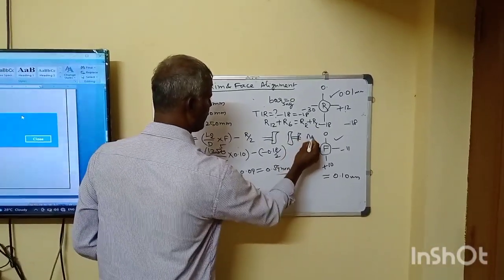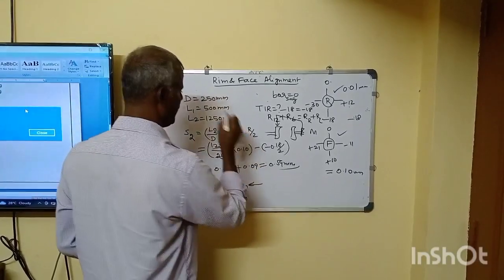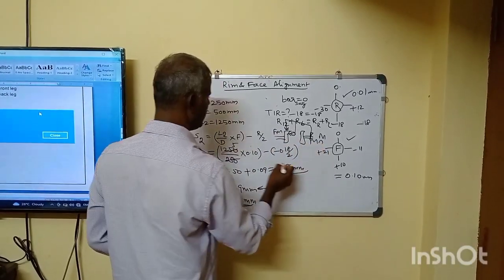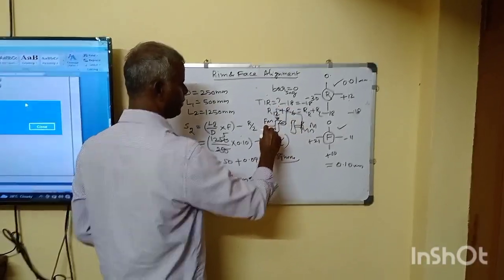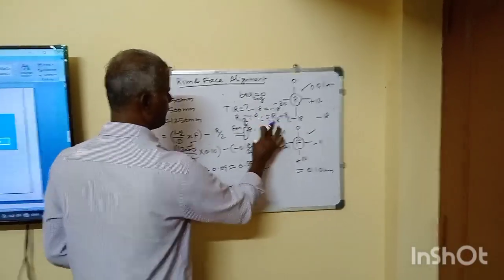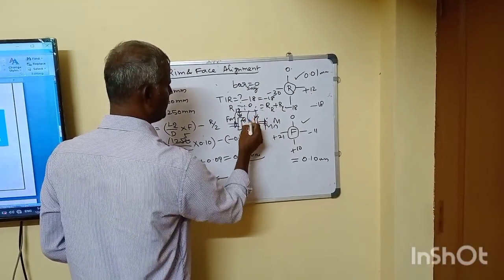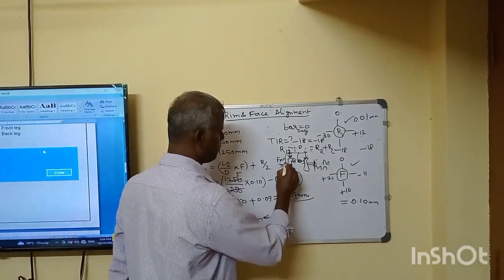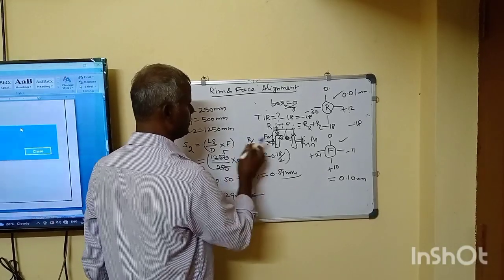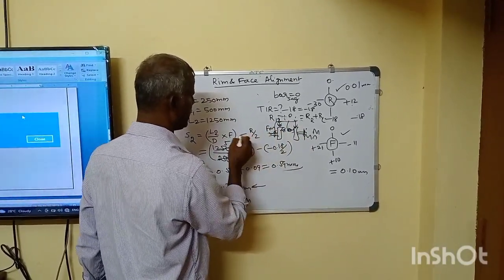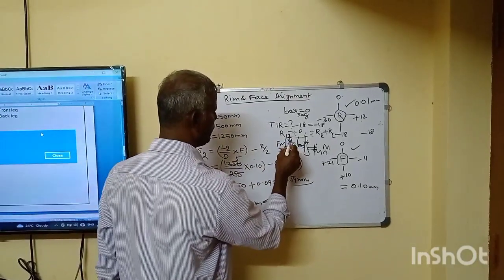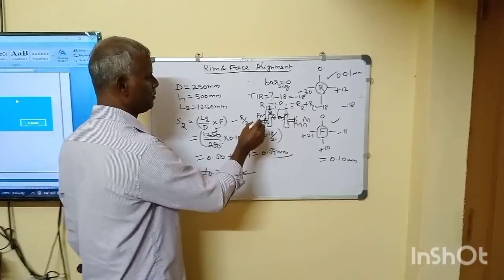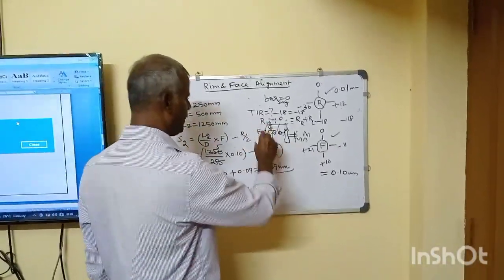Now, if the dial indicator is on the motor, the indicator reading will be minus. The indicator will be moving. The switch side will move. If we consider the switch side of the motor, the switch side will move accordingly. There are changes on the switch side.